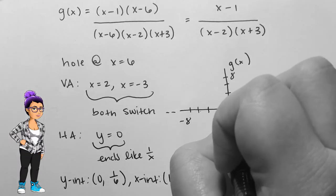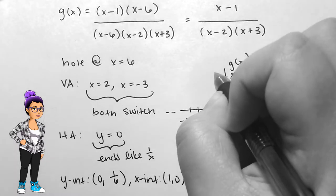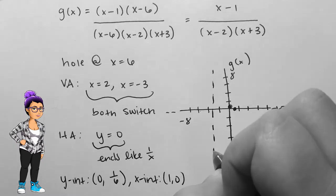In graphing all of this, I'll put the intercepts in their place as points, and the asymptotes as dashed lines that are labeled appropriately.